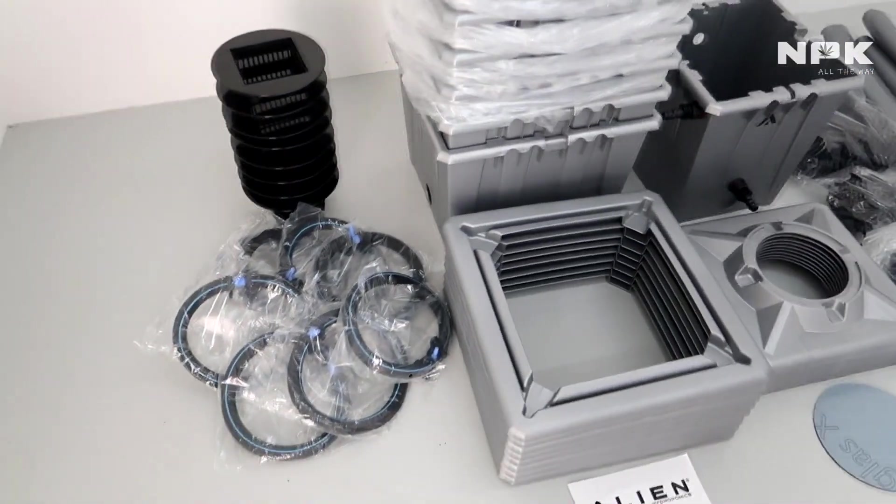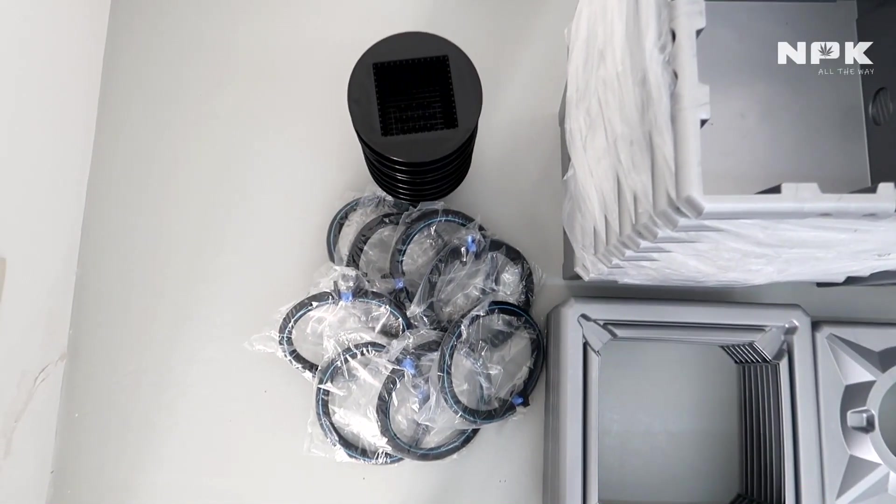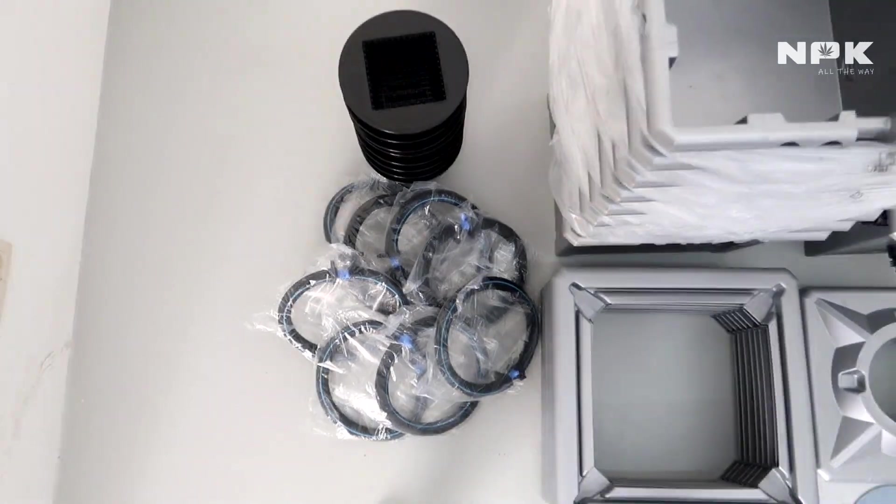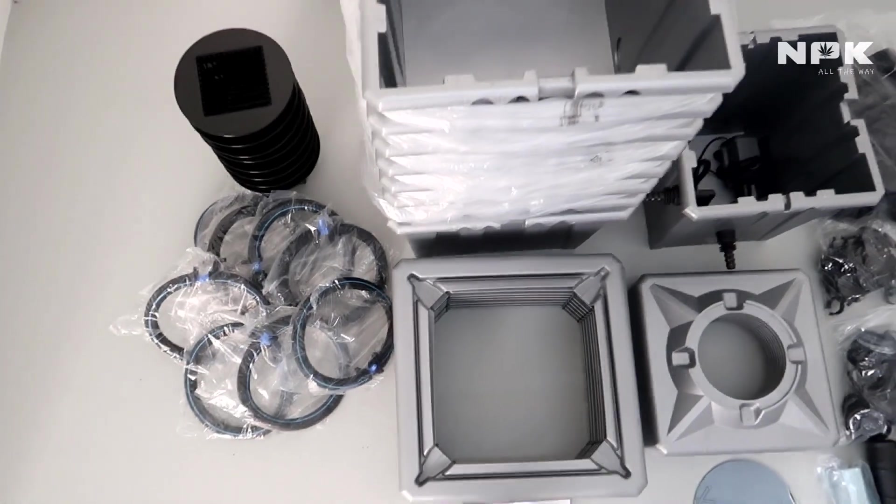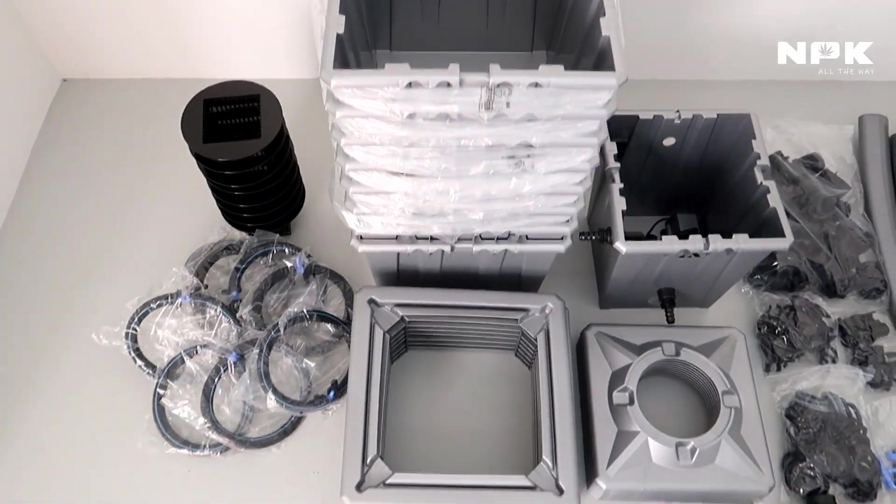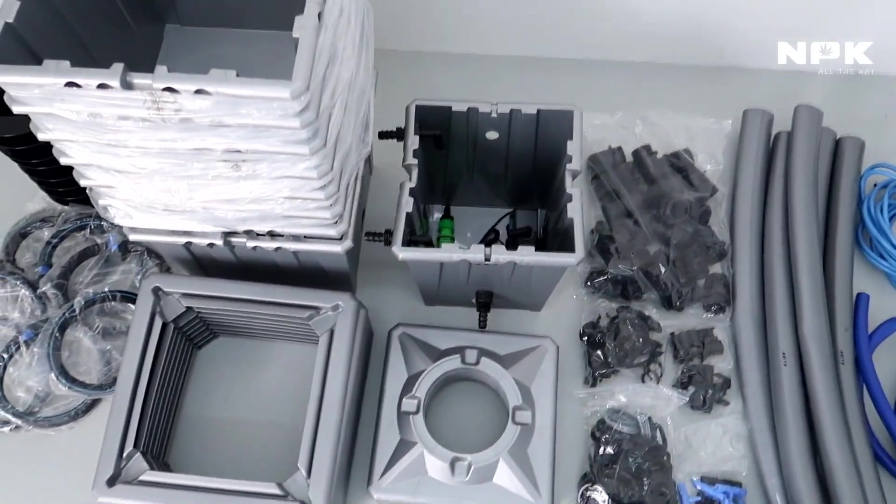You can see all the parts laid out here before we assemble them. At the top you can see the basket where the pot goes, where the hydroton goes in and your plant. Left of that are the aeration rings for the bubbler in the buckets, the buckets themselves with the epicenter on the side. These are the 36 liter buckets, so pretty big ones.